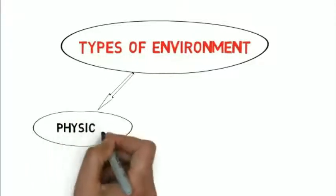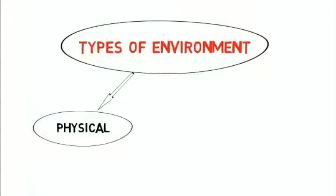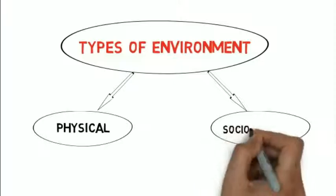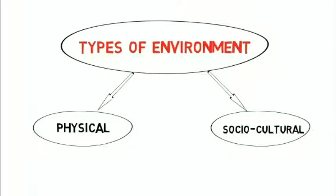Types of environment. Physical environment includes the physical factors that affect the child, such as food, temperature, climate, resources, etc. Social-cultural environment includes social factors like family, community, peer group, etc. It further includes the cultural atmosphere of society such as religion, literature, music, social conventions, and political organization. Every individual inherits cultural traits from the social environment.